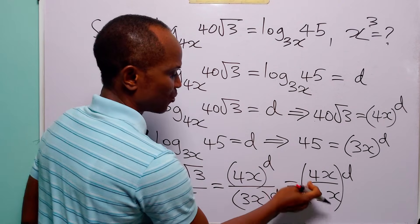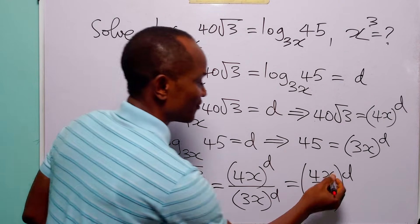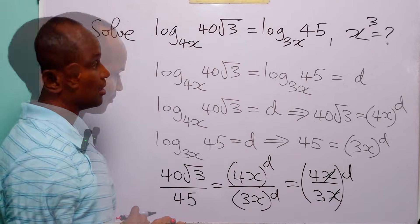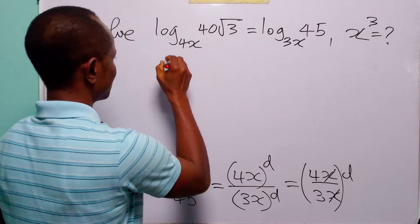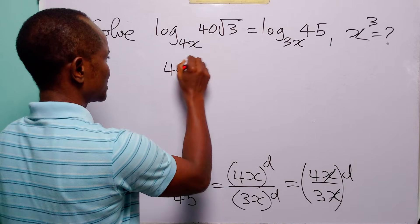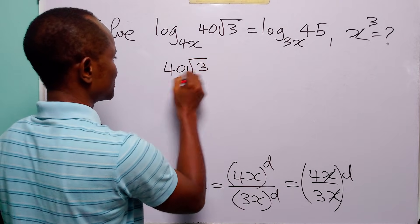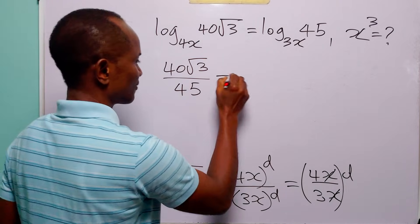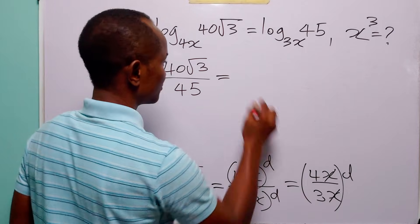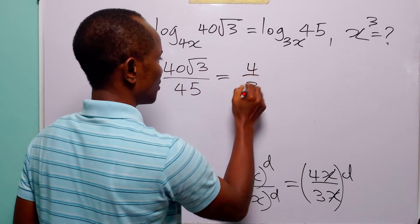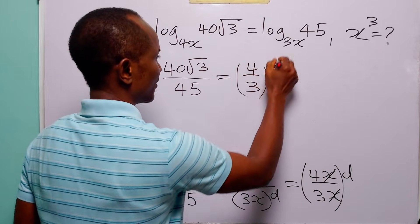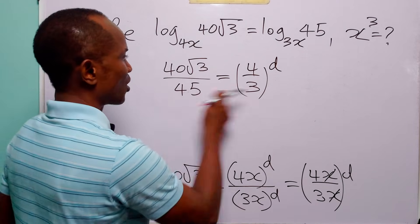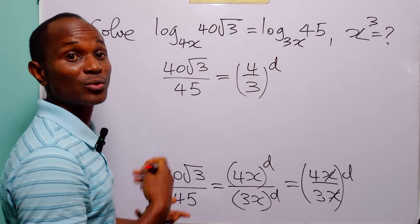When combined like this, we can very easily cancel x. From here we have that 40√3 over 45 is equal to (4/3) to the power d. We now have one equation in one unknown, and we can very easily find the value of d.